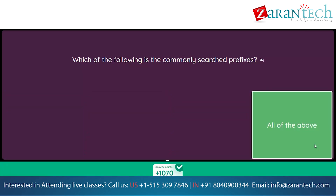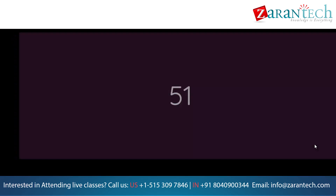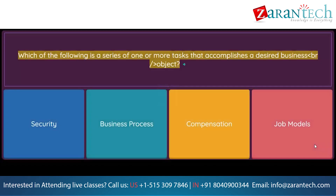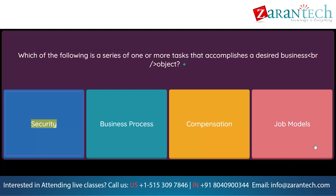Which of the following is a series of one or more tasks that accomplishes a desired business objective? Option 1: Security. Option 2: Business process. Option 3: Compensation. Option 4: Job models.